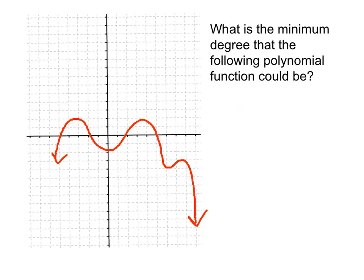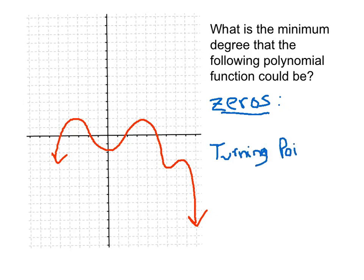A common question asks: given the graph of a polynomial function, what is the minimum degree that polynomial function could be? To answer this, we need to look at the zeros and the turning points. Let's count the zeros: 1, 2, 3, 4 — we have four zeros. And the turning points: 1, 2, 3, 4, 5 — we have five turning points.